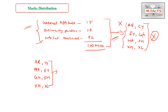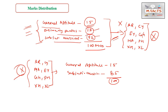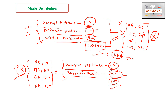For branches AR, CY, EY, GG, PH, XH, and XL, the marks distribution is: General Aptitude 15 marks and Subject Questions 85 marks — totaling 100 marks. Engineering Mathematics is not applicable for these branches. For all other branches, the distribution remains: General Aptitude 15 marks, Engineering Mathematics 13 marks, and Subject Questions 72 marks. The total duration for all papers is 3 hours.